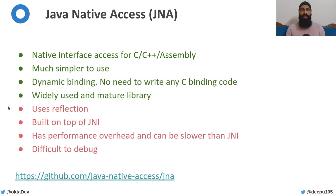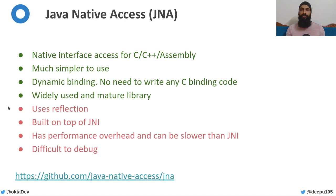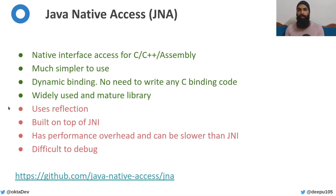The complexity of JNI gave rise to some community-driven libraries that made FFI simpler in Java. JNA is one of them — it is built on top of JNI but makes foreign functions easier to use. It removes the need to write any C bridging code manually, reducing the chance of memory safety issues. It is widely used and battle-tested, so it is definitely a better option than using JNI directly, unless your use case demands extreme performance tuning.